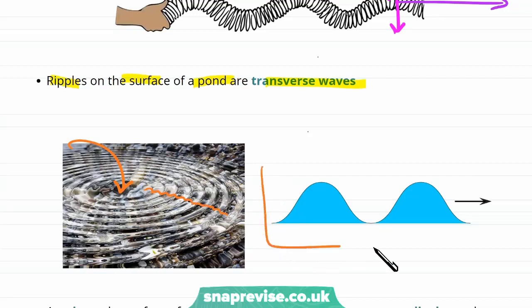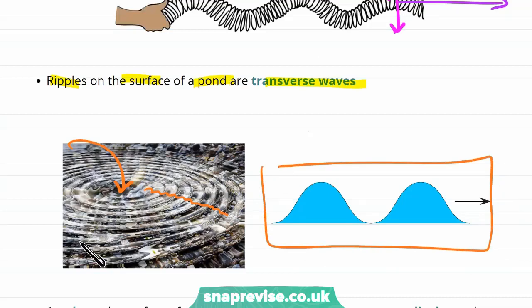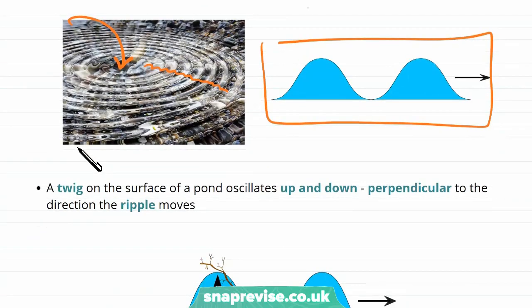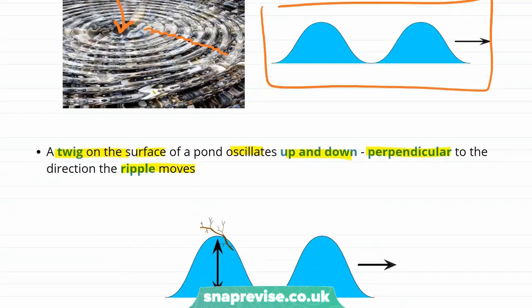If we looked side on it would look something like this. How do we know that this wave is transverse? Well, let's put a twig on the surface of the pond. This twig is going to oscillate up and down, which is perpendicular to the direction that the ripple moves. So the twig oscillates up and down, which is perpendicular to the direction that the ripple is moving in.